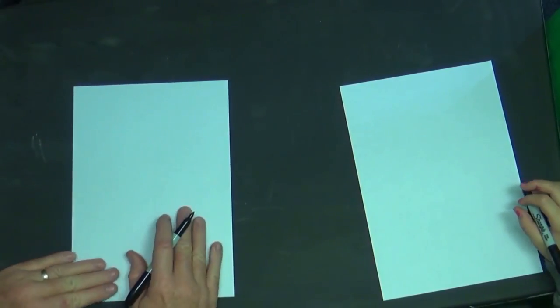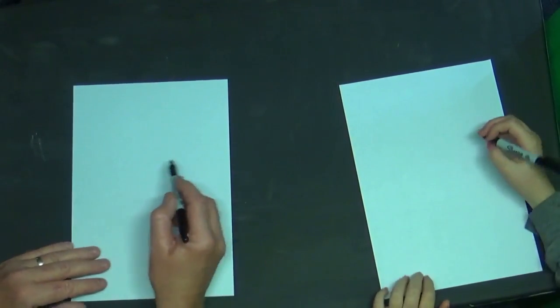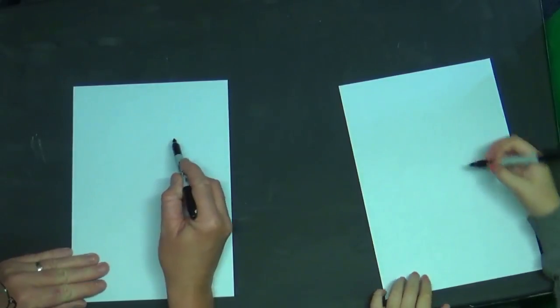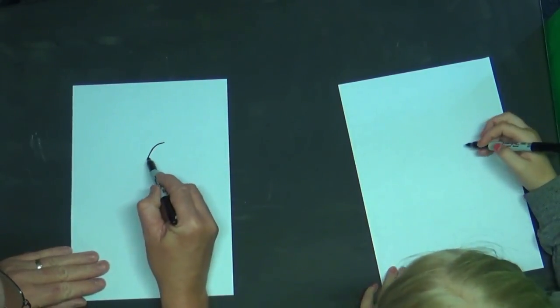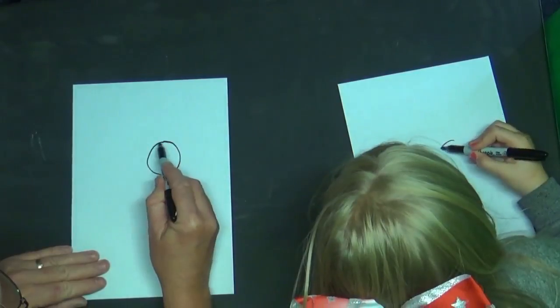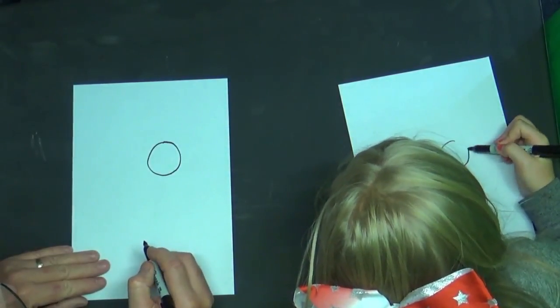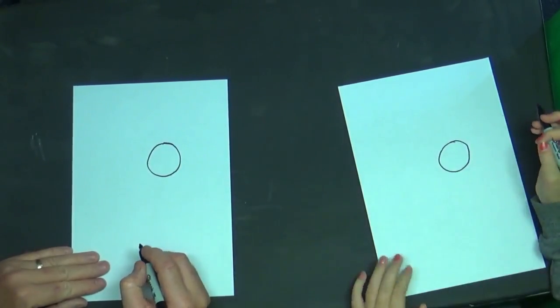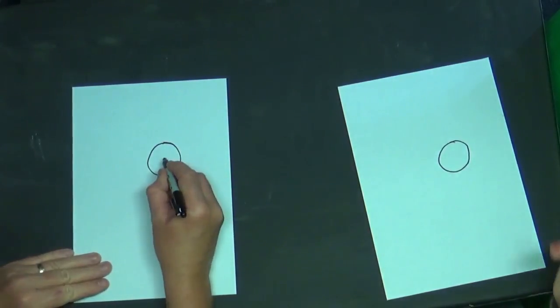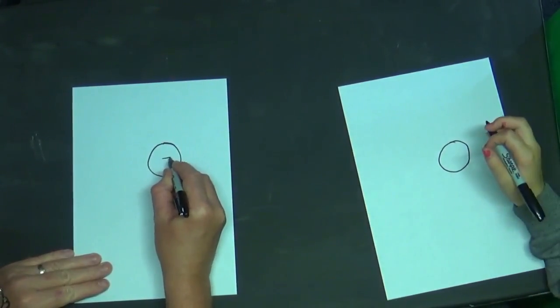So let's start off with a basic shape then, let's do a circle like this. That's a pretty good circle. Okay watch now, do a D, can you see a D?